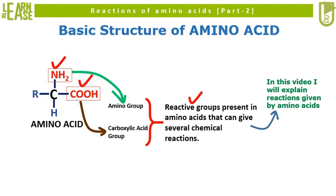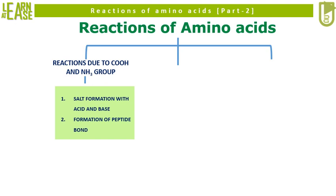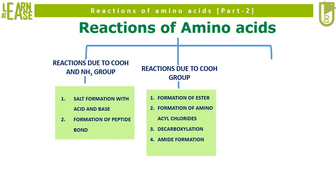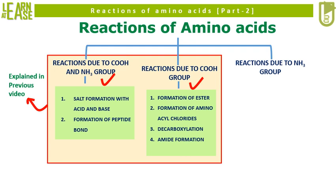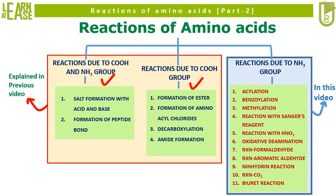The amino group and the carboxylic group in the amino acids participate in several chemical reactions which will be discussed in this video. Reactions of amino acids can be due to involvement of both amino group and carboxylic group, or reactions can be purely due to involvement of carboxylic group, or reactions can be purely due to involvement of amino group. In this video I will portray reactions of amino acids that occur purely due to involvement of amino group. These reactions are: acylation, benzoylation, methylation,